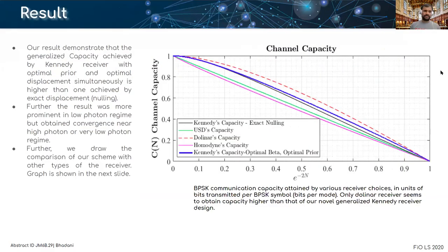Our results demonstrate that the generalized capacity achieved by Kennedy receiver with optimal prior and optimal displacement simultaneously is higher than the one achieved by the exact displacement. Further, the result was more prominent in low photon region but obtained convergence near high photon region.